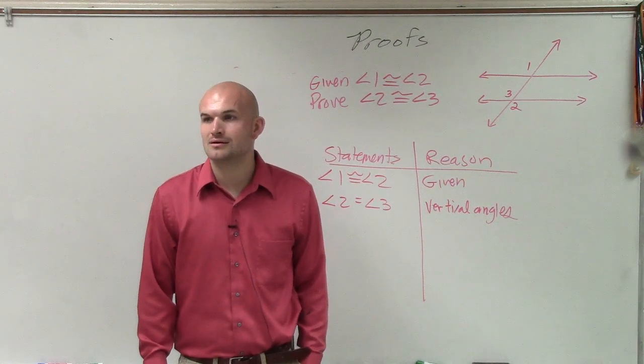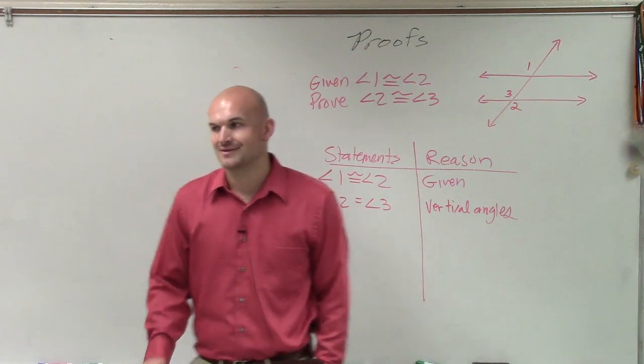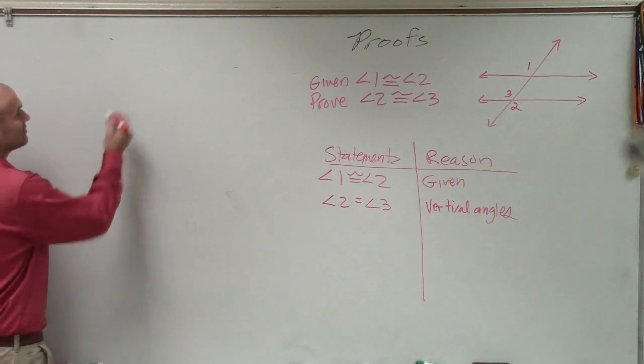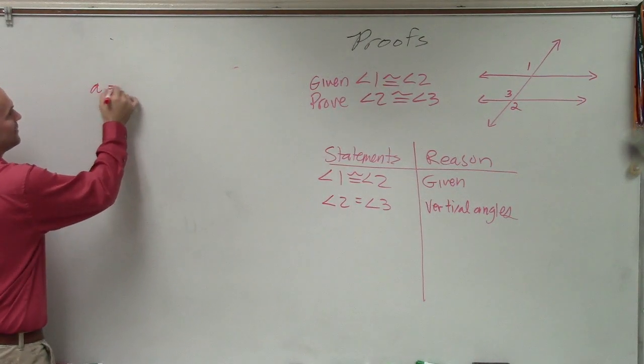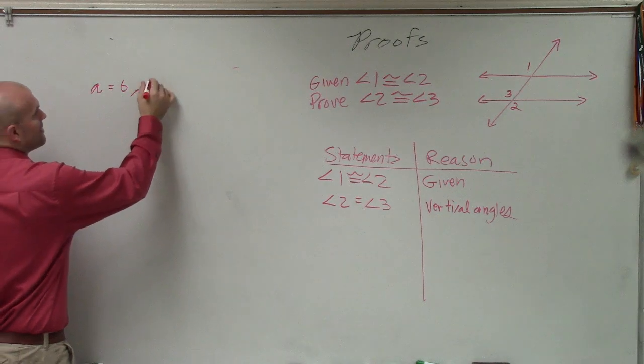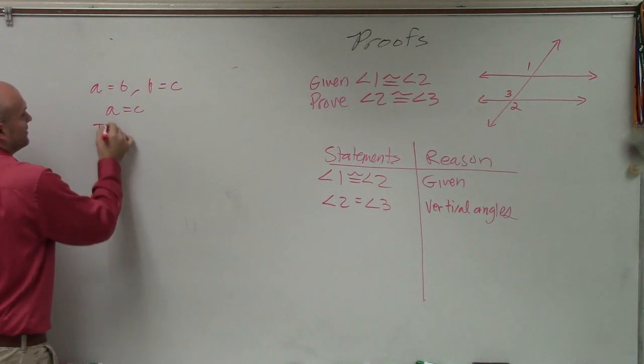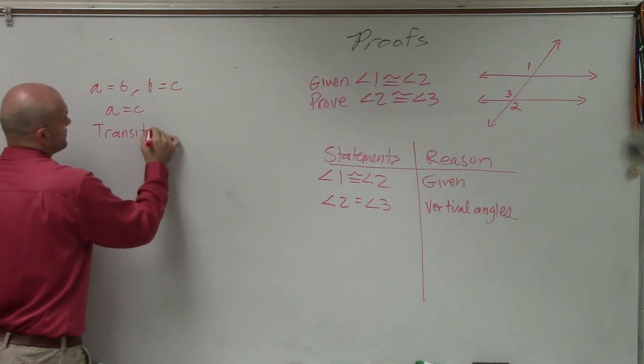Is it corresponding? One and three are corresponding, yeah. We could write that with corresponding. But if A equals to B and B equals to C, then you can say A is equal to C. That's called the transitive property.